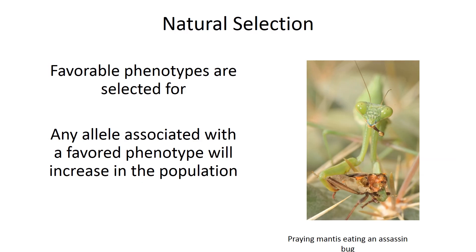There are a couple of things to clarify. Natural selection acts on the individual — it does not act on a population. And specifically with an individual, it's selecting for favorable phenotypes. Any allele associated with a favorable phenotype is going to increase in a population.